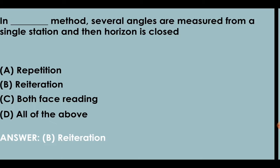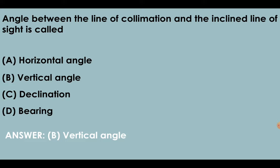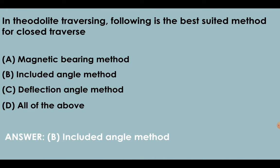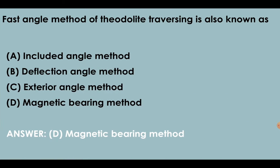In reiteration method, several angles are measured from a single station and then horizon is closed. Angle between the line of collimation and the inclined line of sight is called vertical angle. In theodolite traversing, the best suited method for closed traverse is included angle method. Fast angle method of theodolite traversing is also known as magnetic bearing method.